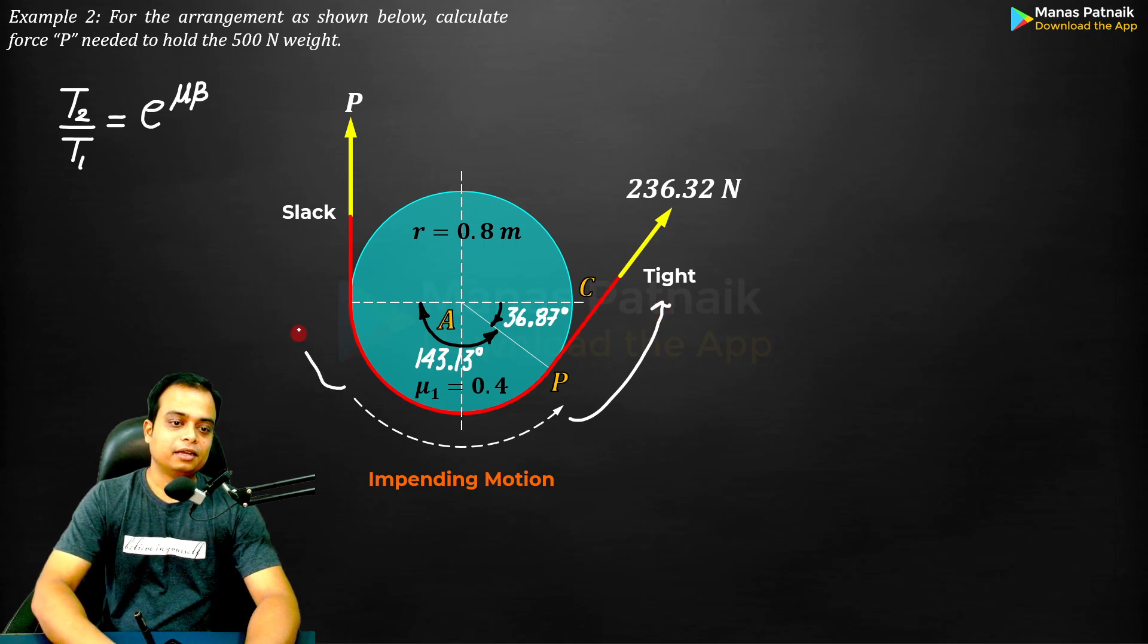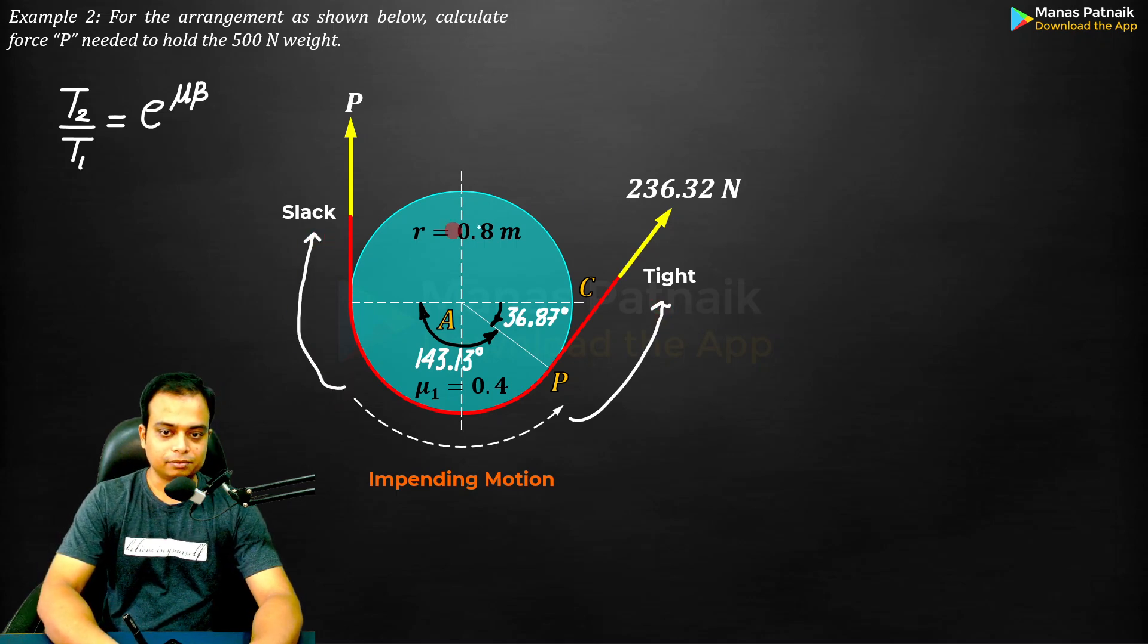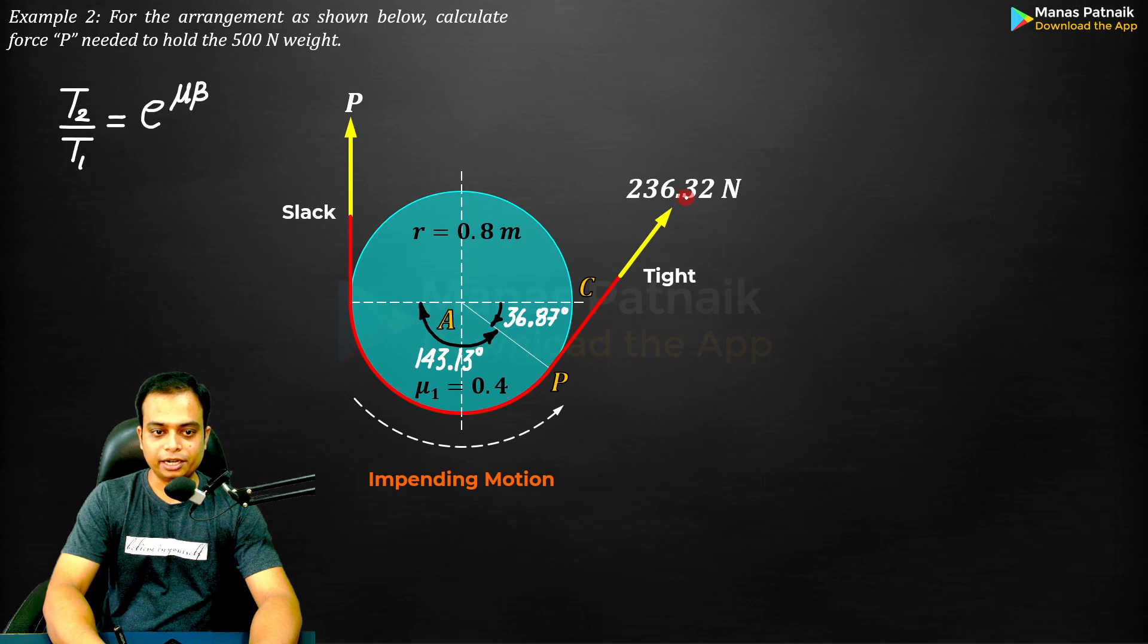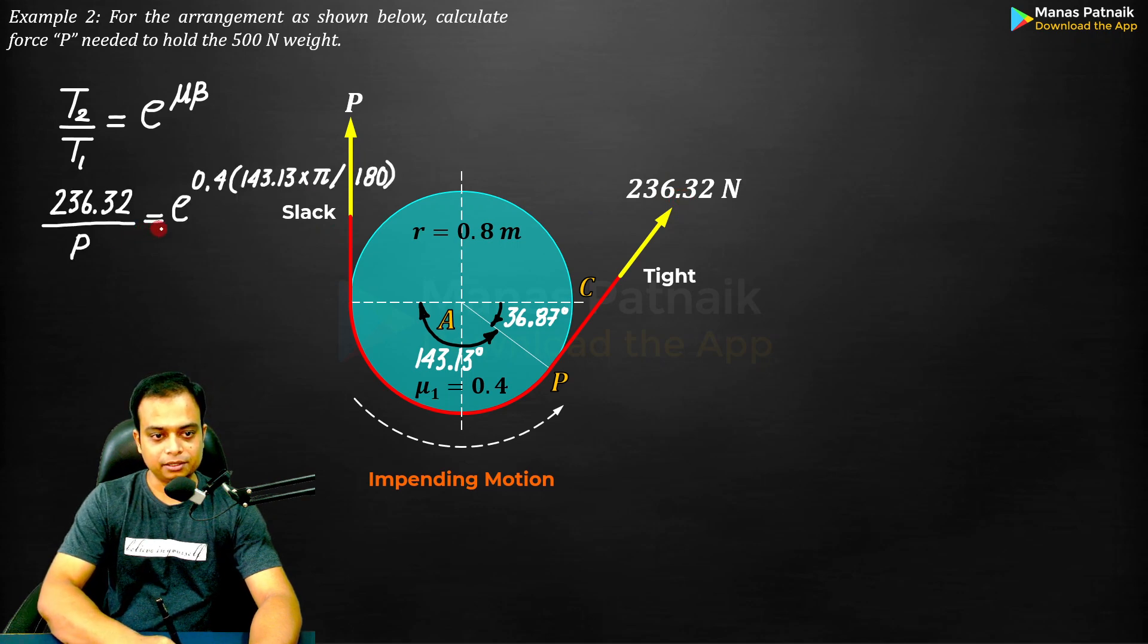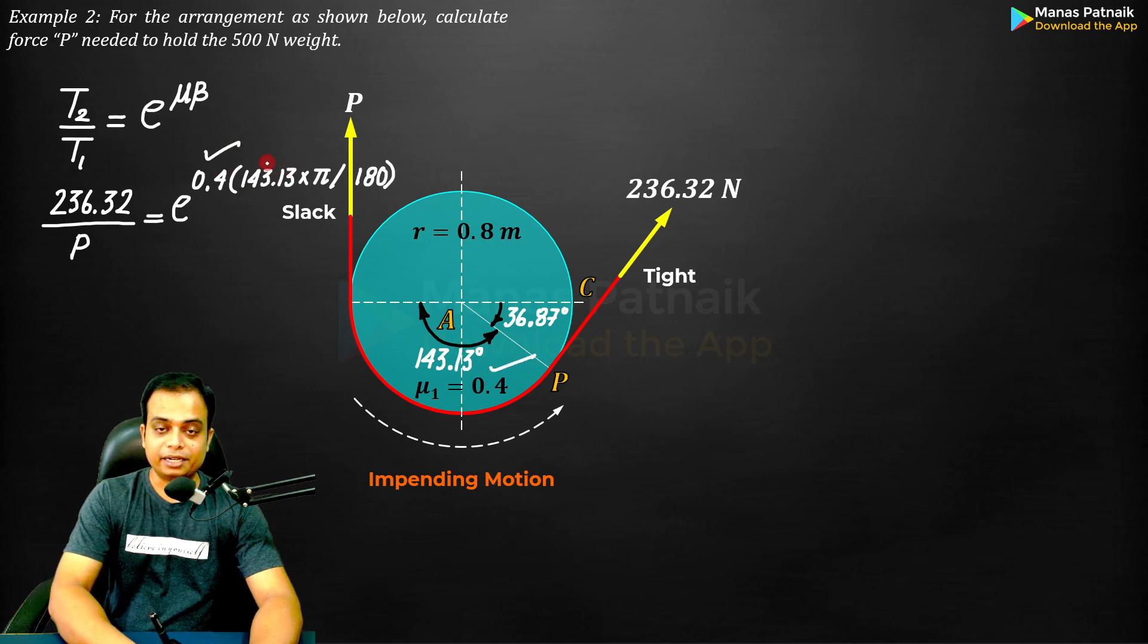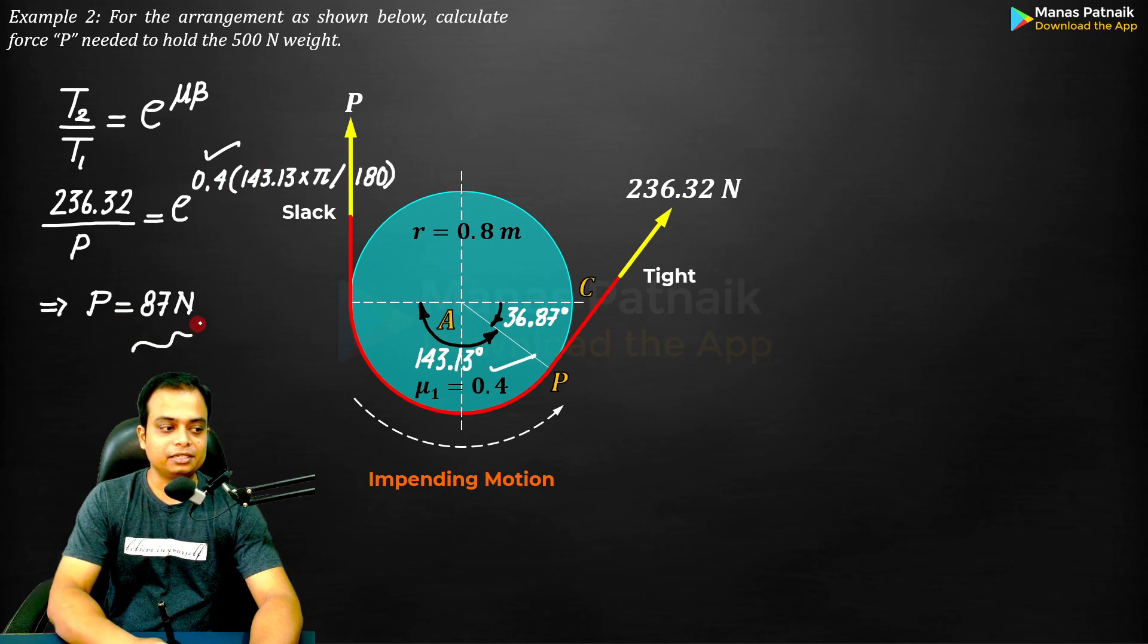So 236.32 divided by P equals e^(μβ). μ is known to us and it is 0.4 - now it is different. This beta has to be converted into radians. Same stuff, just do the math - this is what you get: 87 newton. So damn easy.